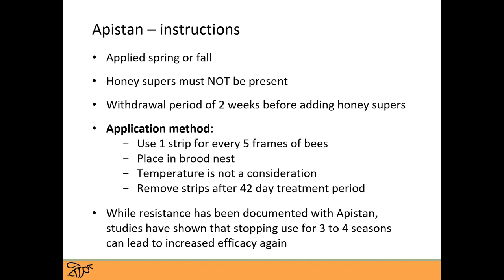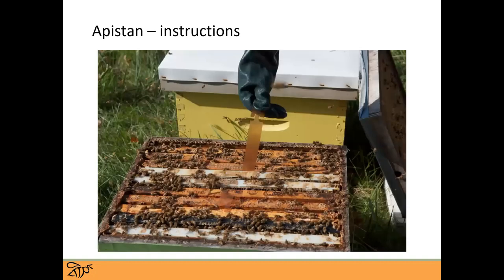I'll talk a bit more about resistance at the end of this talk. The Apistan strips are brown with little tabs at the top that you can bend so they rest on the tops of frames and don't fall down. An important thing to note: the person putting them in is wearing gloves. These chemicals can be dangerous to you as well, so make sure you're wearing proper protective equipment. Don't touch these strips with your bare hands.